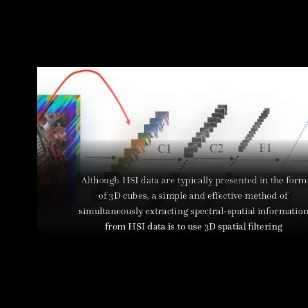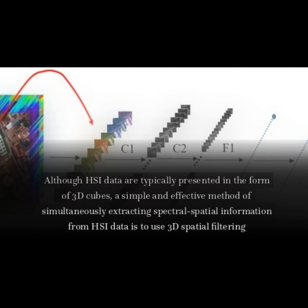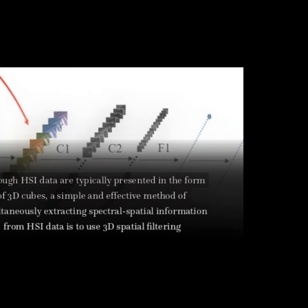Although HSI data are typically presented in the form of 3D cubes, a simple and effective method of simultaneously extracting spectro-spatial information from HSI data is to use 3D spatial filtering.